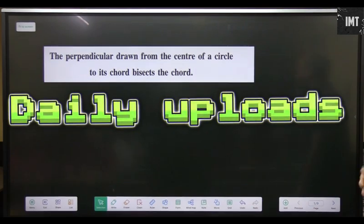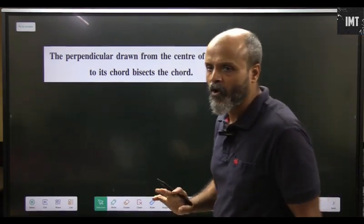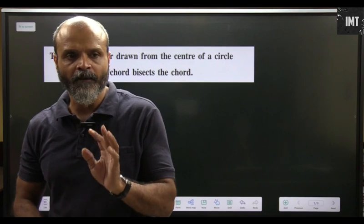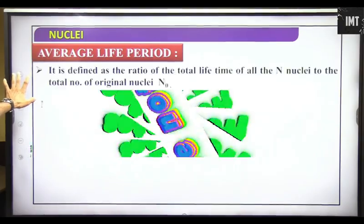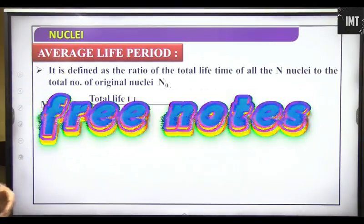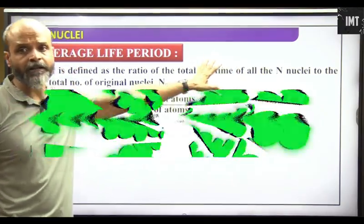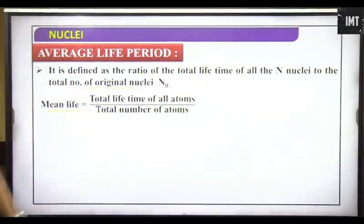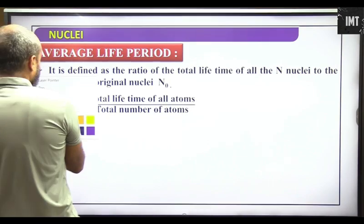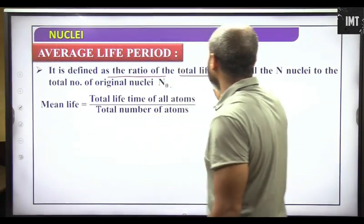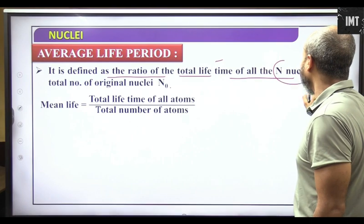Perpendicular drawn from the center of a circle to its chord bisects the chord. First of all, what is the average life period? It is defined as the ratio of the total lifetime of all N nucleons.